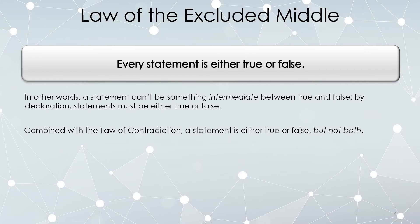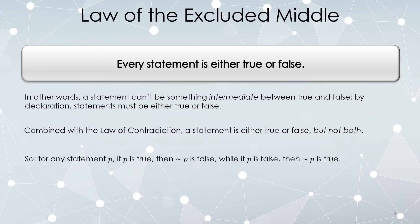If I combine this with the law of contradiction, a statement must be either true or false, but it cannot be both at the same time. So if P is true, then not P is false; but if P is false, then not P is true. This really accounts for all possible combinations of true and false for a statement P and its negation not P.